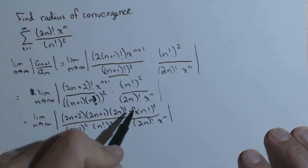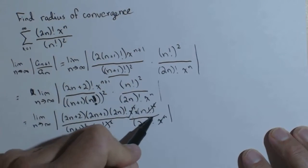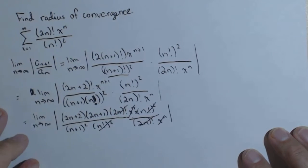So we can start doing some canceling. The x to the n's are going to cancel. The n factorial squareds are going to cancel. And the 2n factorials are going to cancel.